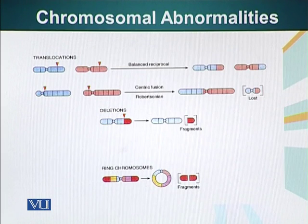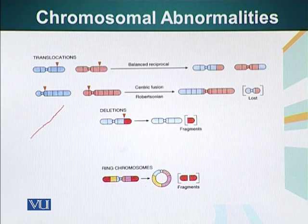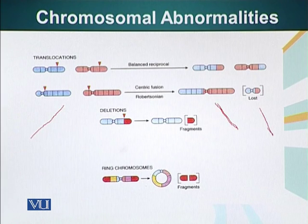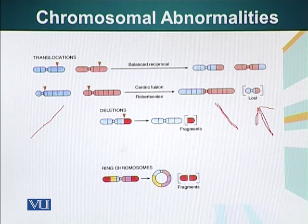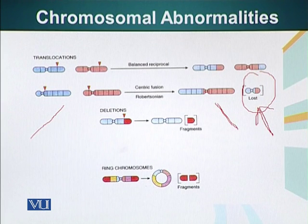There is another type of translocation in acrocentric chromosomes. As mentioned, acrocentric chromosomes have a very small P arm. If a translocation occurs between two acrocentric chromosomes, two types of chromosomes are formed: one large chromosome and one small chromosome. The small arm of the acrocentric chromosome codes for ribosomal RNA, and since we have five acrocentric chromosomes, if this small chromosome is lost it generally has no significant effect. This is called centric fusion or Robertsonian translocation.